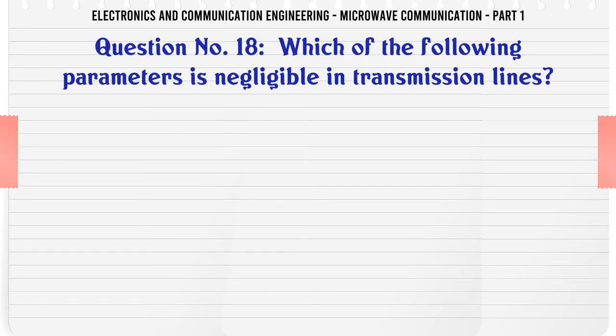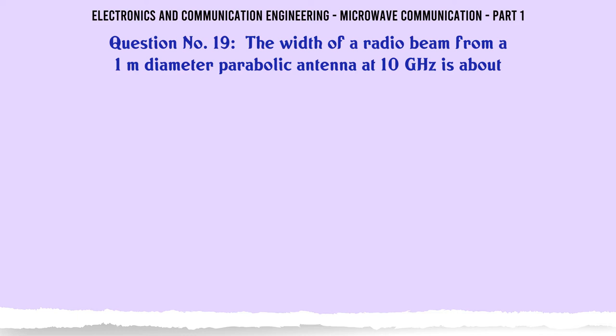Which of the following parameters is negligible in transmission lines? A. R, B. L, C. C, D. G. The correct answer is G.